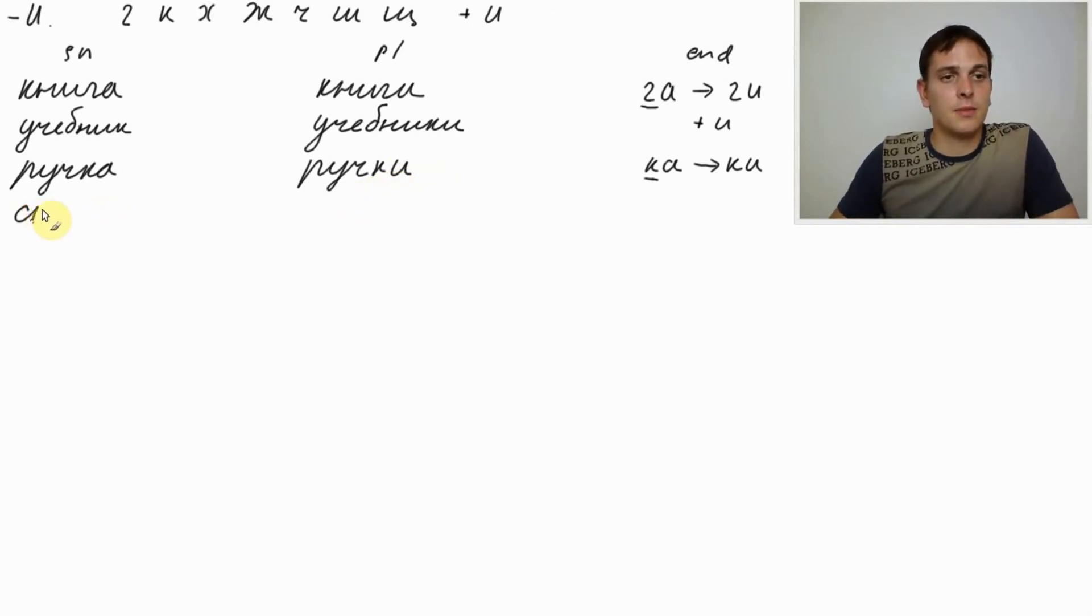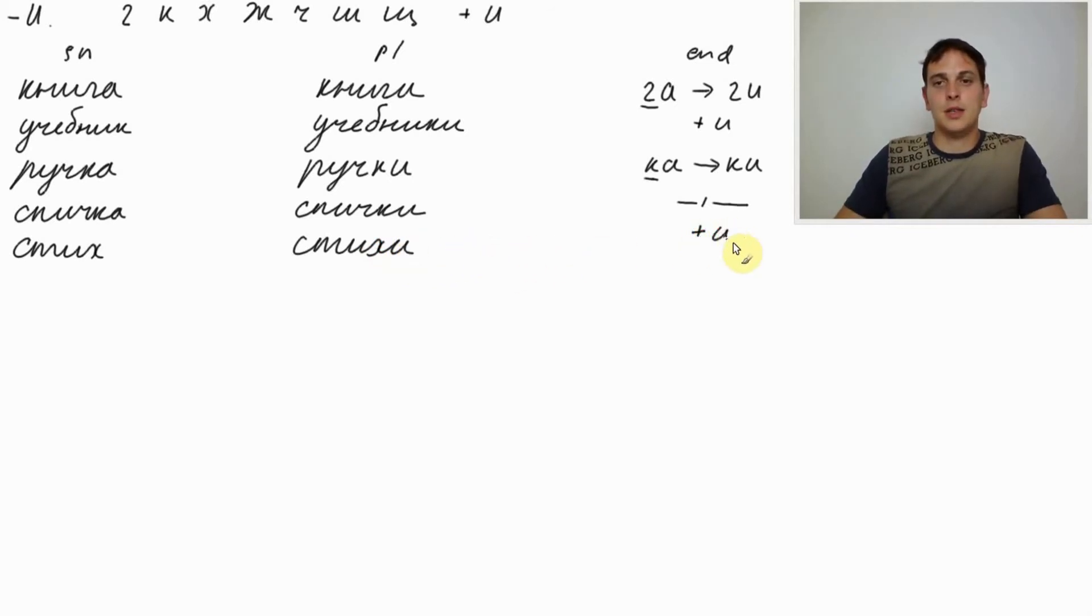Next one СПИЧКА. СПИЧКА is a match. So matches. And one of the matches is СПИЧКА. And the plural of СПИЧКА. Again the same rule. We got ending ЧКА. So we replace А with И. СПИЧКИ. Now СТИХ. СТИХ was a poem. СТИХ. And СТИХИ. So we need to place И to create plural. Poems. СТИХИ. And well the general scheme. The endings will follow these particular rules.